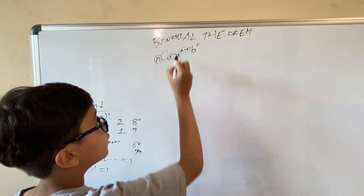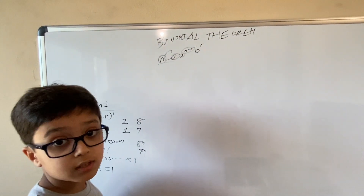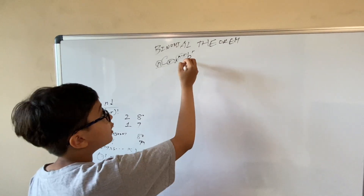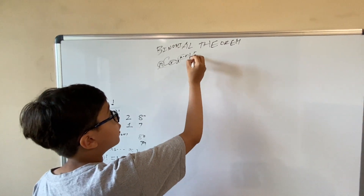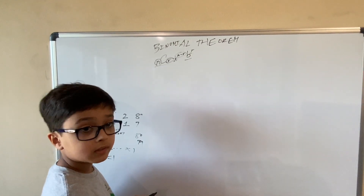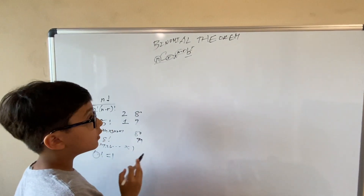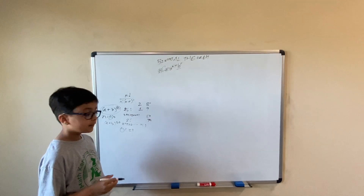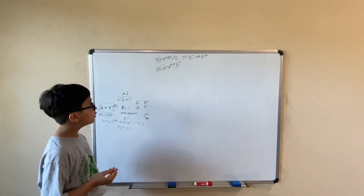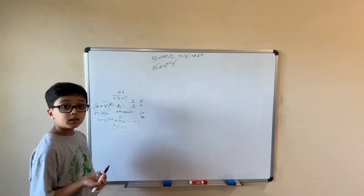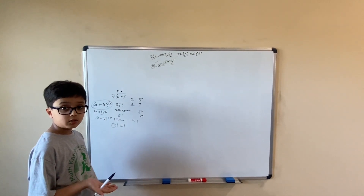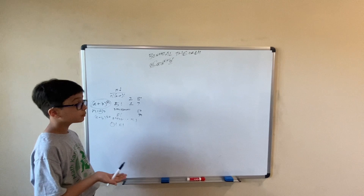So, a to the power n minus r — that should be pretty simple — and b to the power r. So now I've explained combinations, factorials, and the binomial theorem.